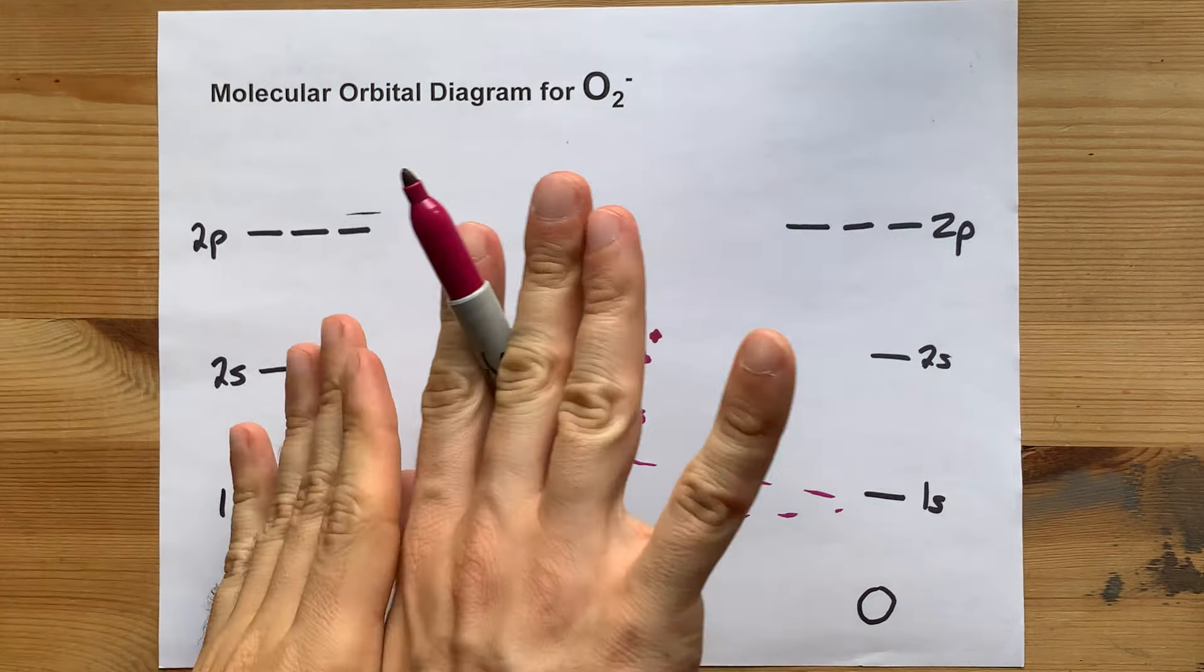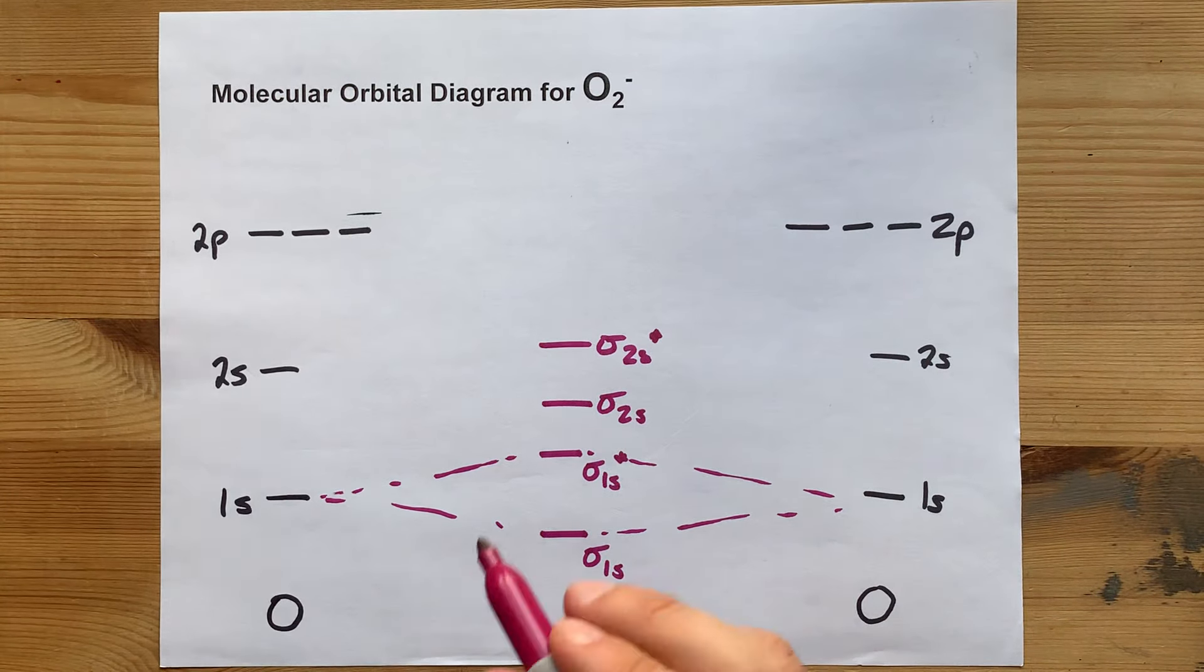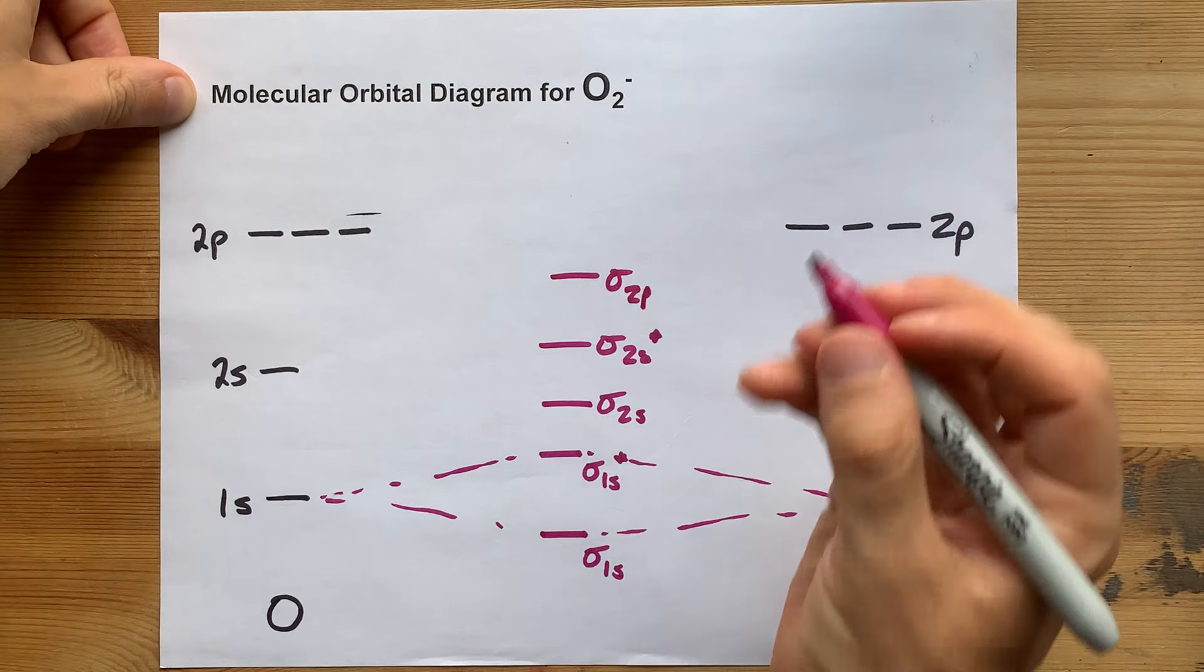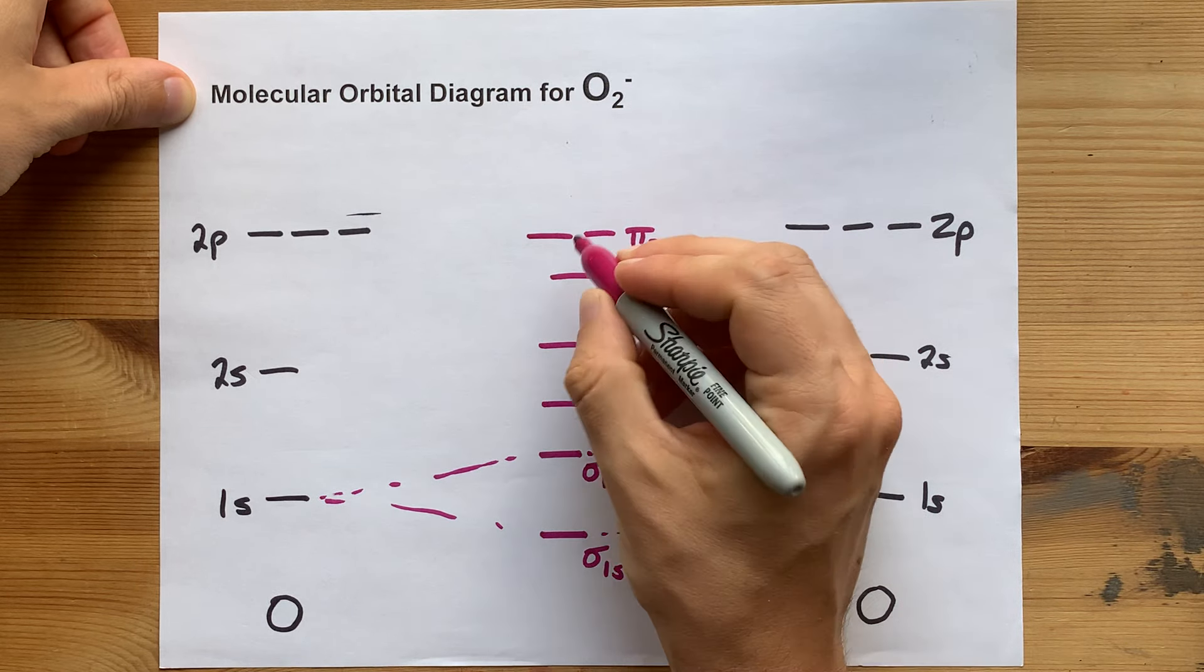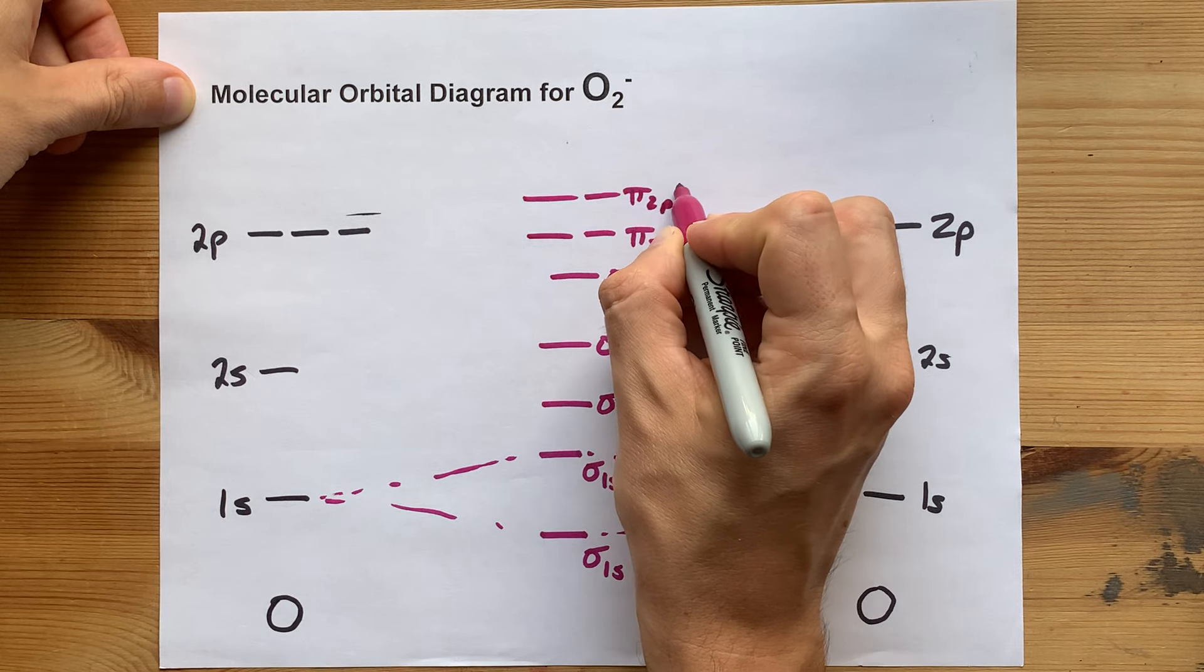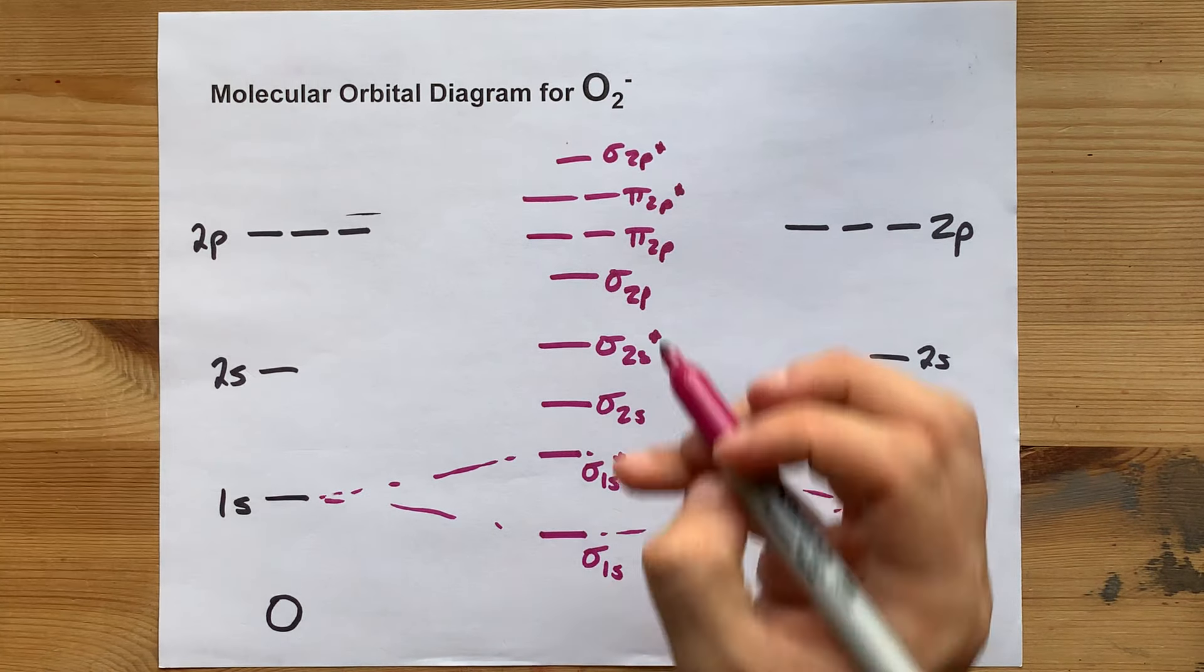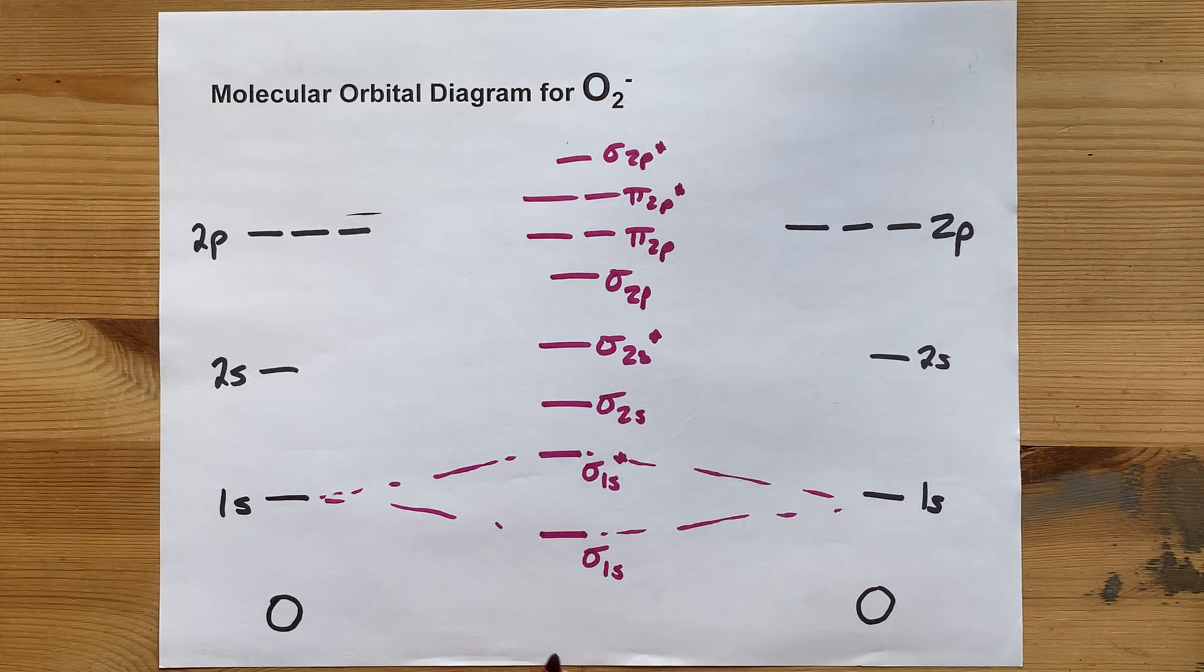For oxygen and farther to the right, oxygen, fluorine, and neon, you should remember that sigma 2p bonding is lowest in energy. Then you have the pi 2p next lowest. Pi 2p antibonding is next, and sigma 2p antibonding is after that. This is the arrangement for oxygen, fluorine, and neon when they bond with each other.